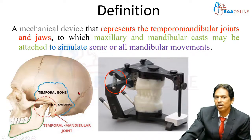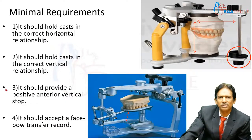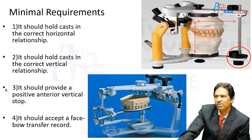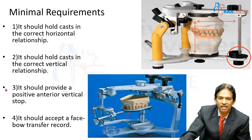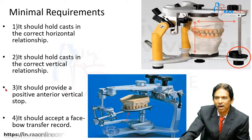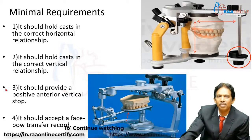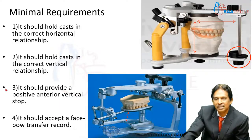Now that the definition of an articulator is clear, the next topic is: what are the requirements of the articulator? If something is called an articulator, it must fulfill certain requirements. We have many articulators — Class I, II, III, and IV — and some need only a minimum set of requirements, while high-end articulators need all requirements. These are categorized as minimum requirements and additional requirements.